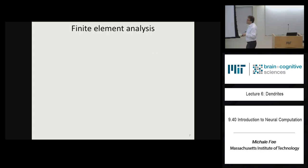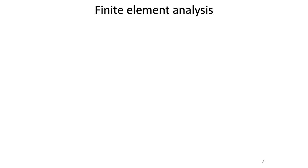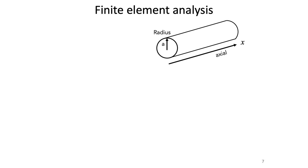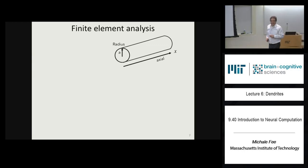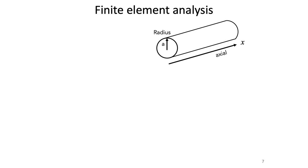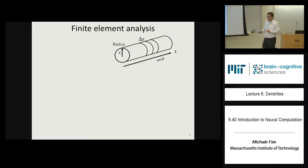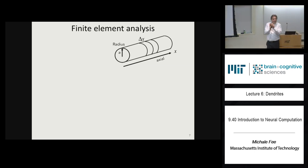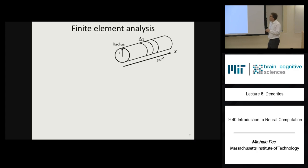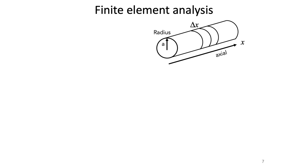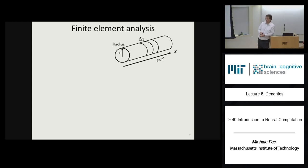We're going to analyze a piece of dendrite using finite element analysis. We'll approximate the dendrite as a cylinder of constant radius a and axial dimension x. We'll break this cylinder into little slices of length delta x, model each slice with a separate little circuit, connect them together, and then let delta x go to zero to get differential equations describing the relationship between voltage and current in the piece of dendrite.